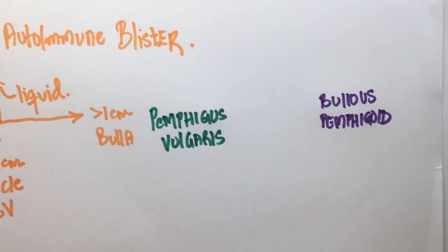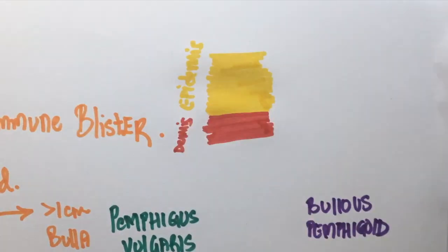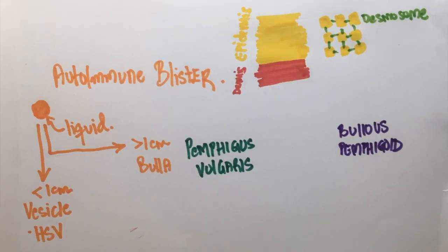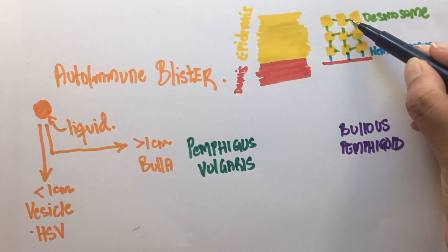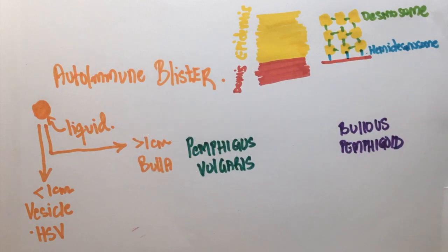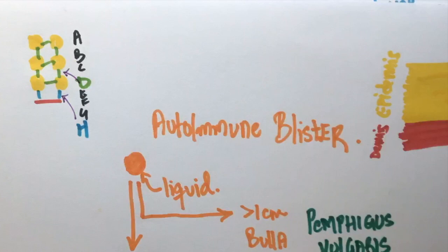Before jumping into the pathology, let's take a look at the layers of the skin. The yellow layer represents the epidermis and the red layer represents the dermis. Cells in the epidermis are connected to each other by desmosomes. Cells in the basal layer adhere to the basement membrane via hemidesmosomes. A trick to remember: if you write down the alphabets, D comes on top of H — so desmosomes are on top and hemidesmosomes are below.